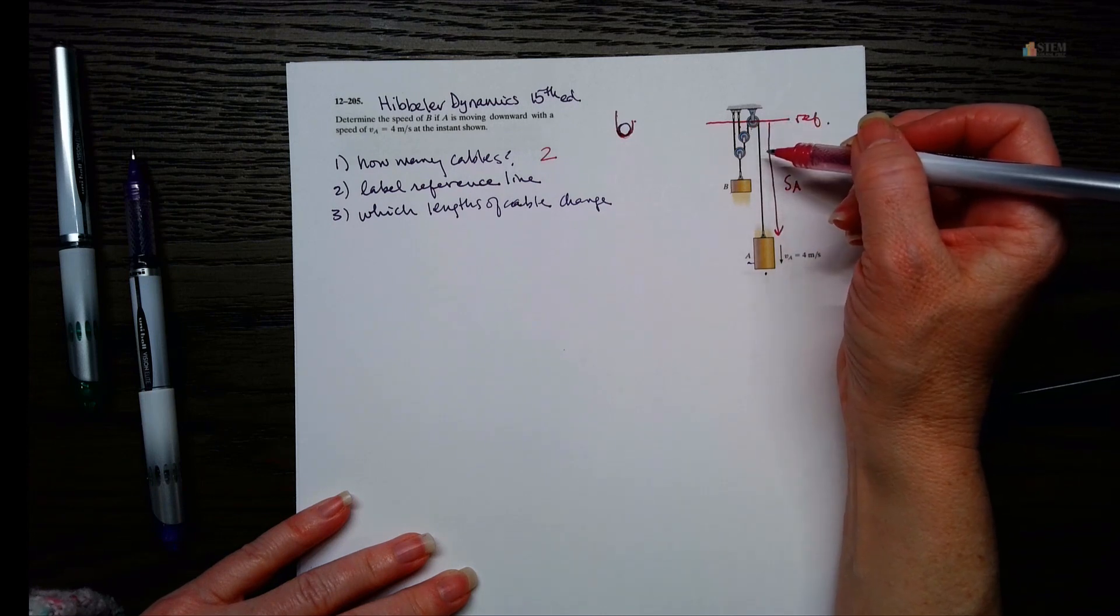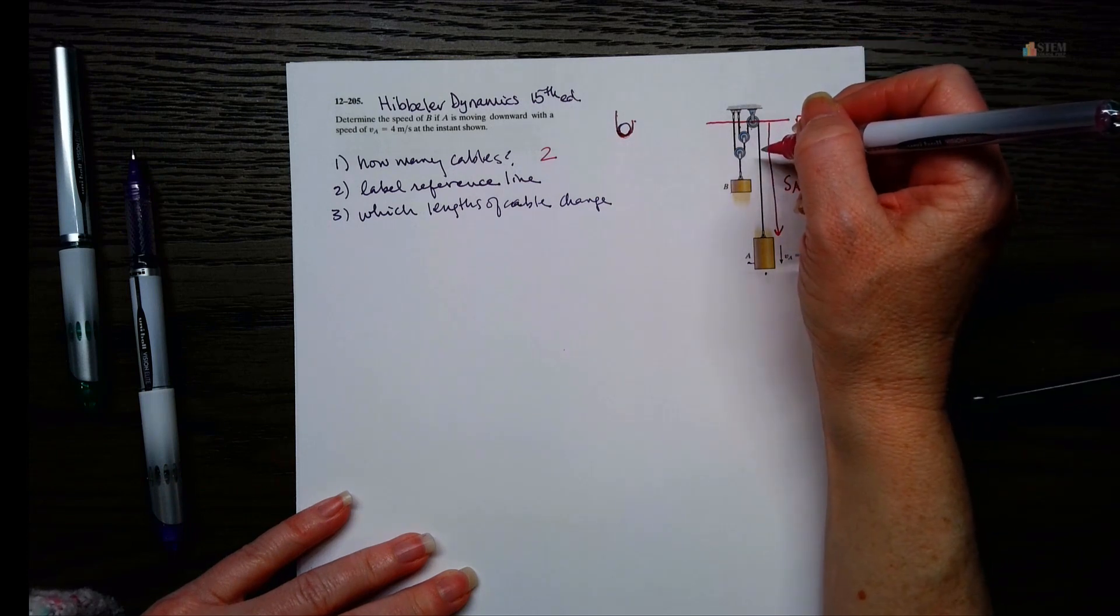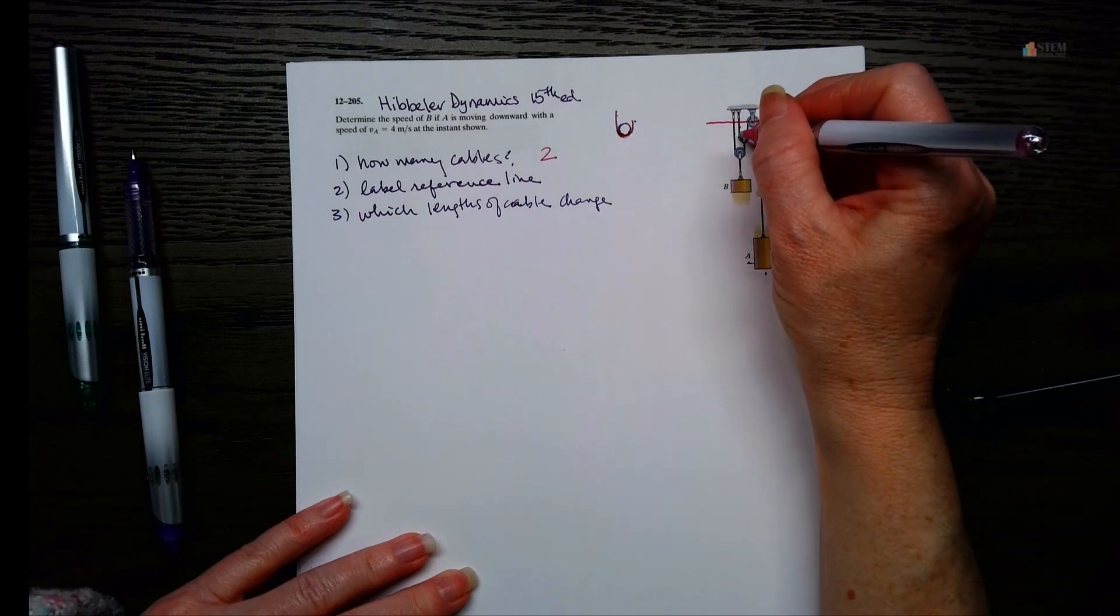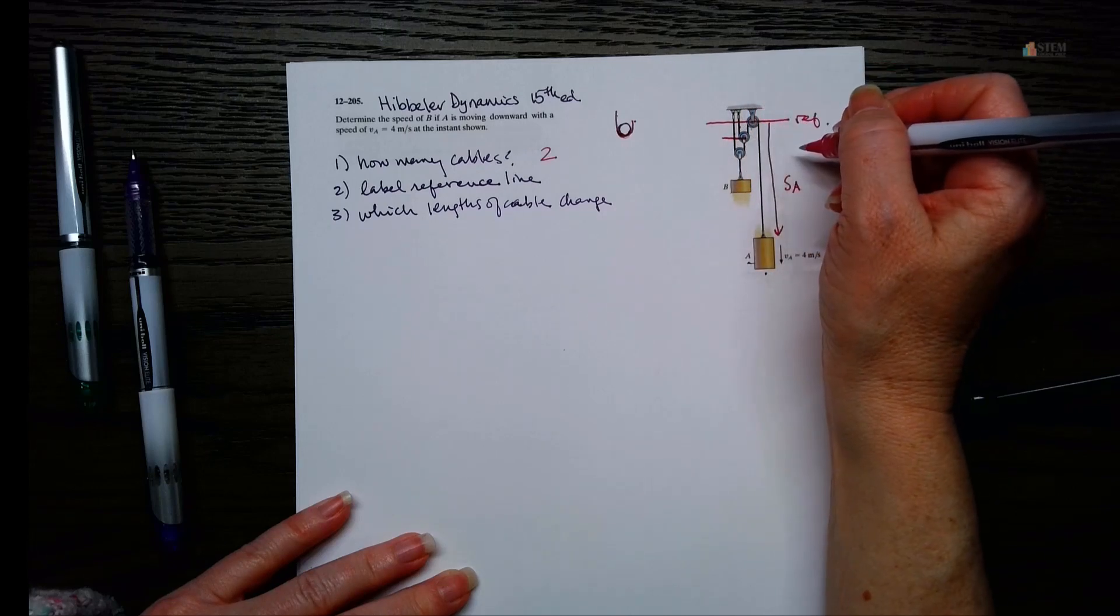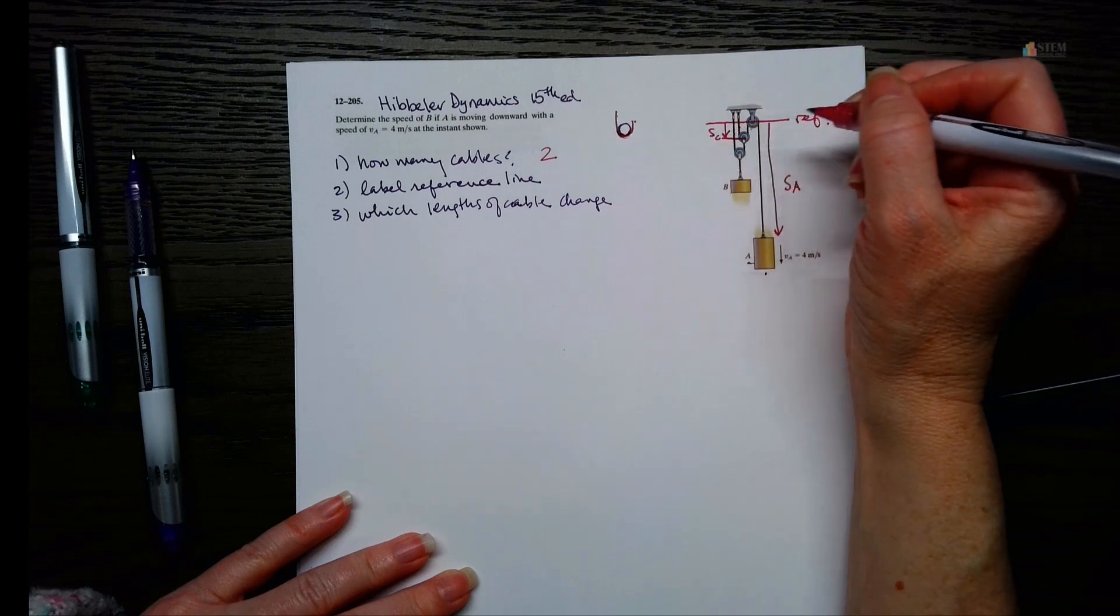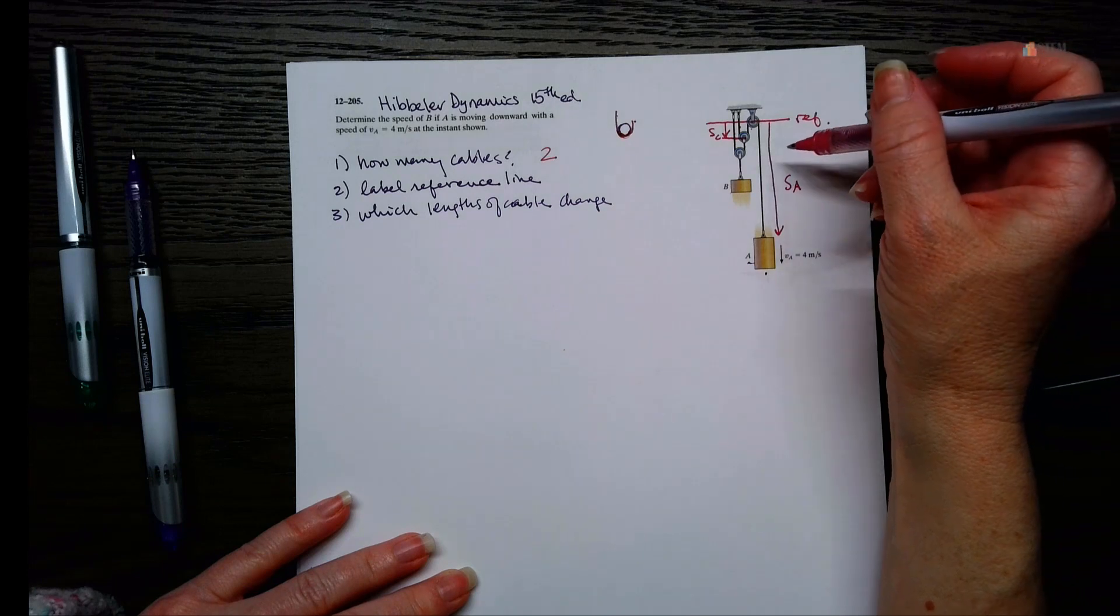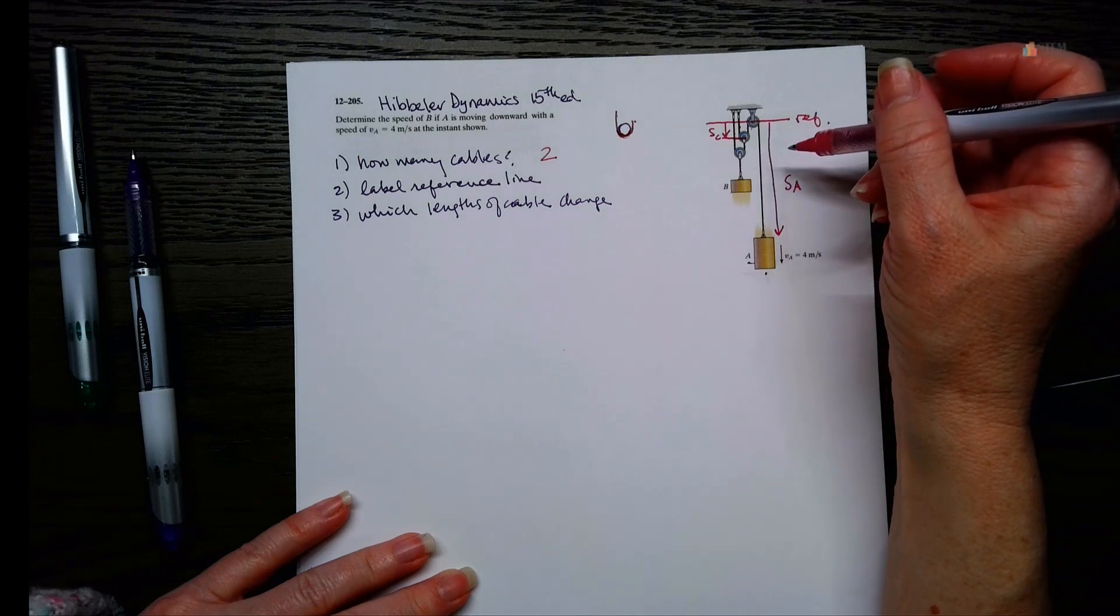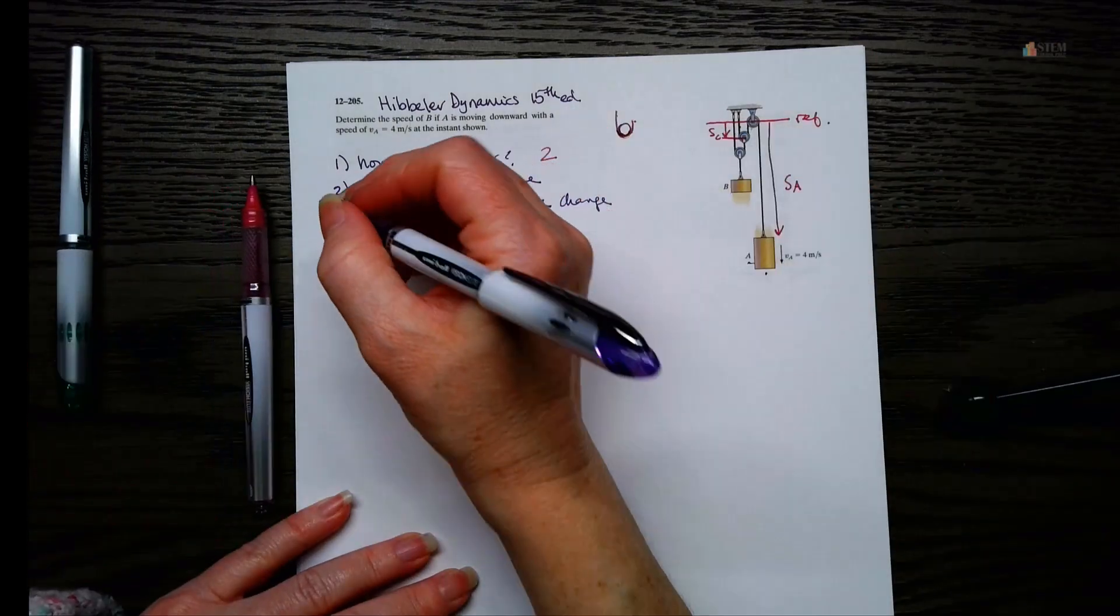Okay, so I need something to basically kind of measure that length. So what we're going to do is let's just measure to the center of that little pulley, and let's call that, let's just call it SC. Alright, so now we've got this. Okay, and we're going to come back to this in just a second.